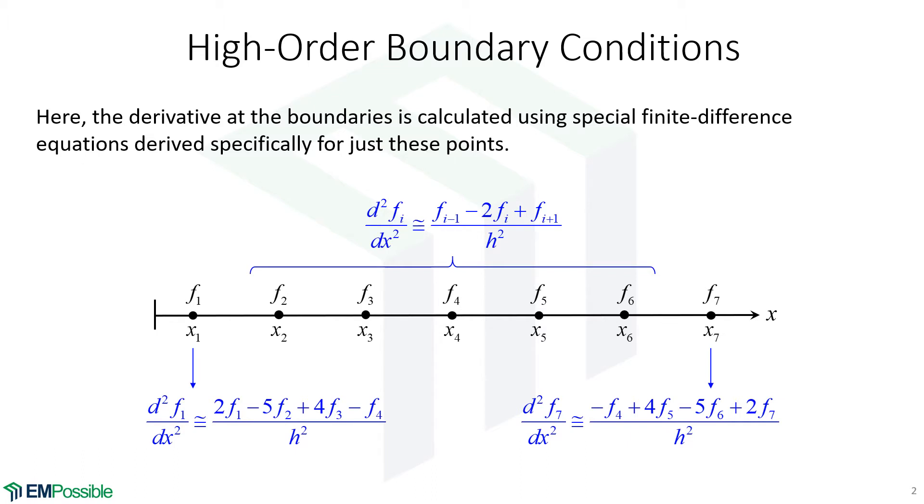We needed to calculate a second order derivative all the way across the grid. So we have our standard approximation for a second order derivative, and that works for all the interior points. We came across a problem at the end points, and so what we did is we derived our own special finite difference equations for the first and last points.